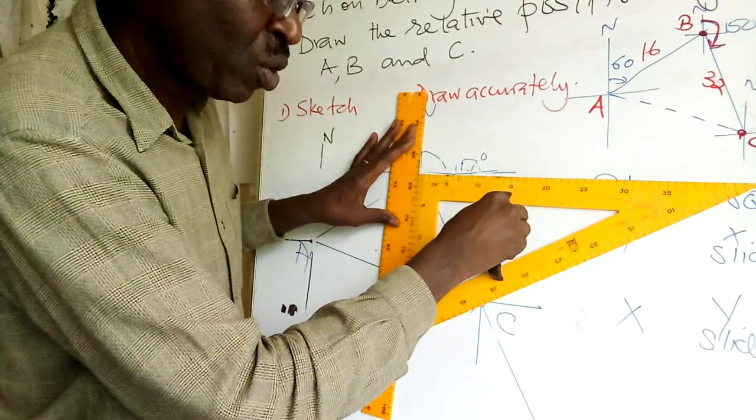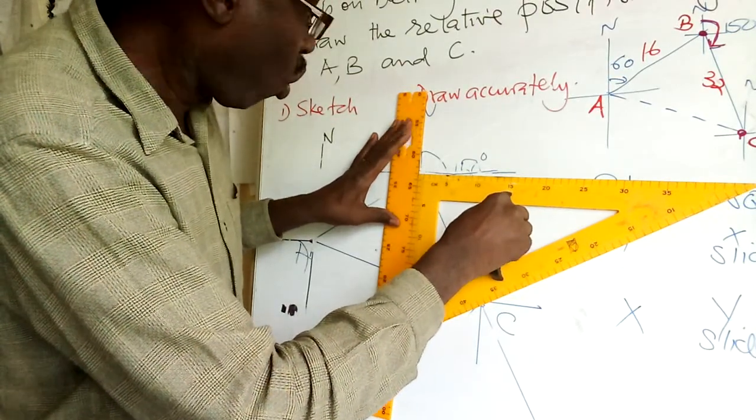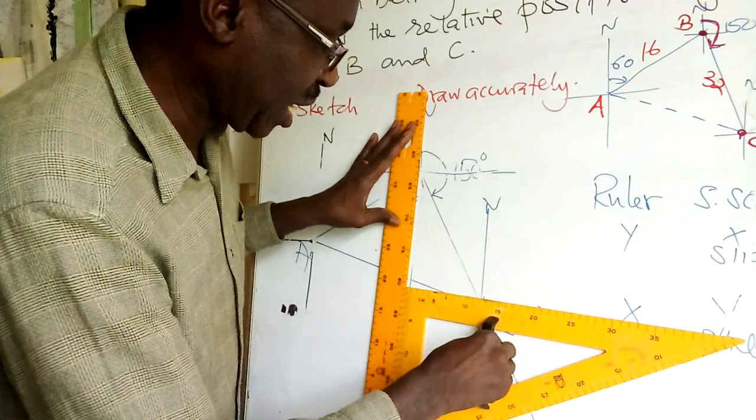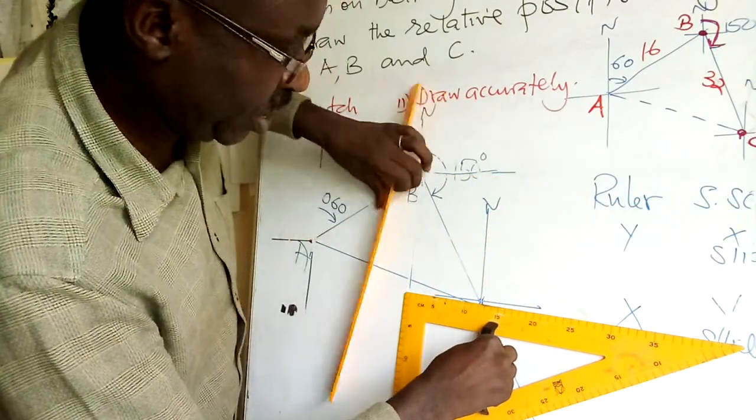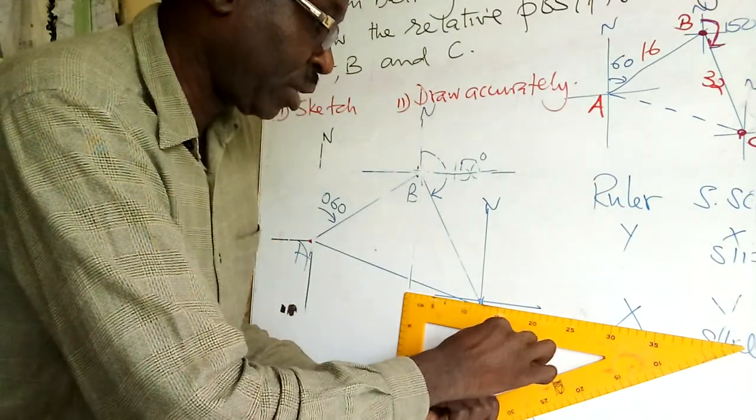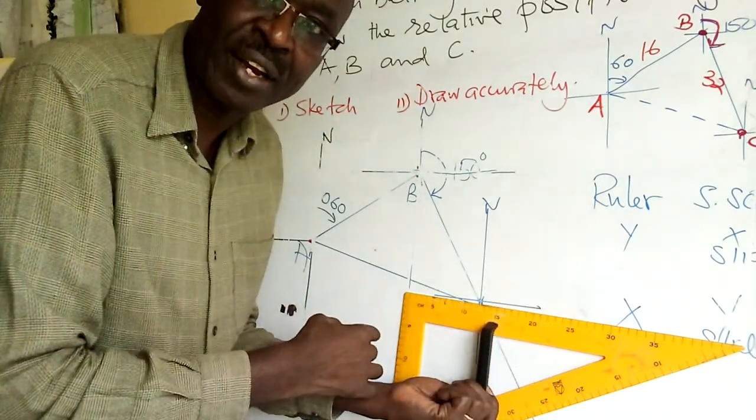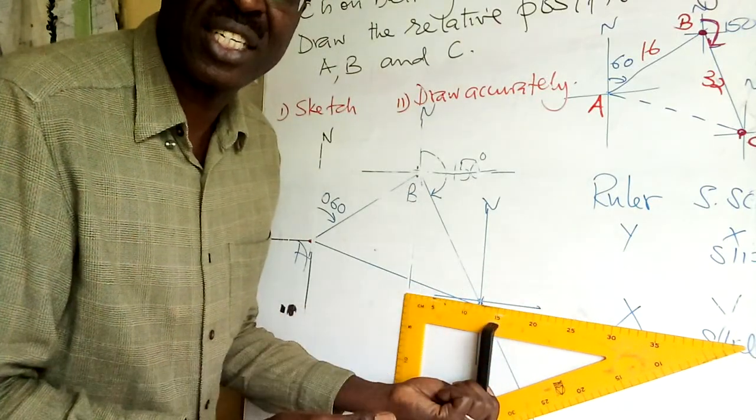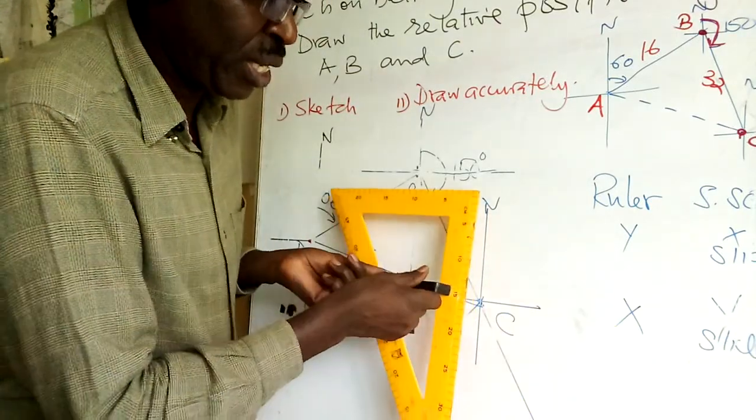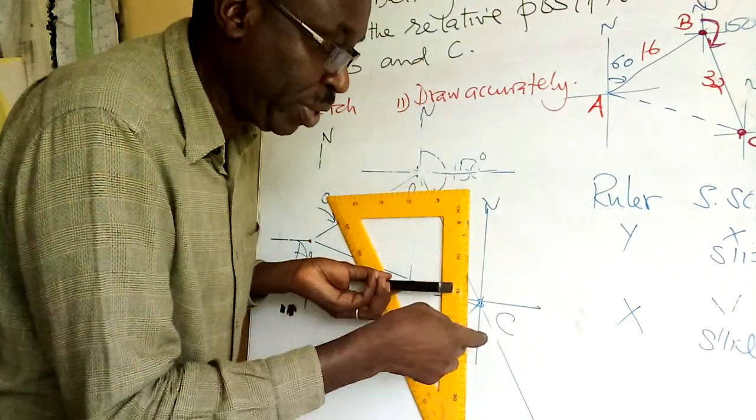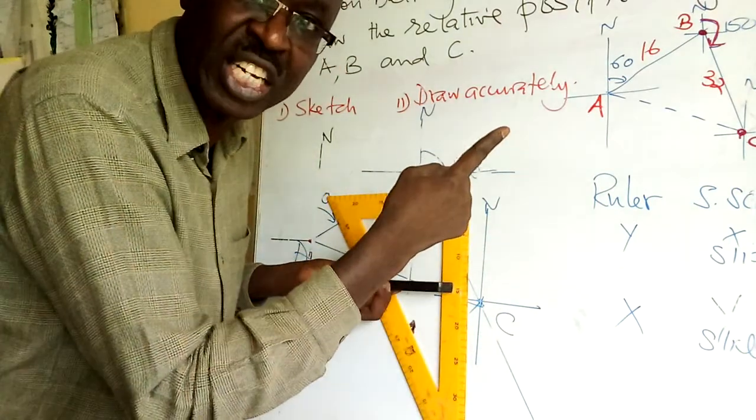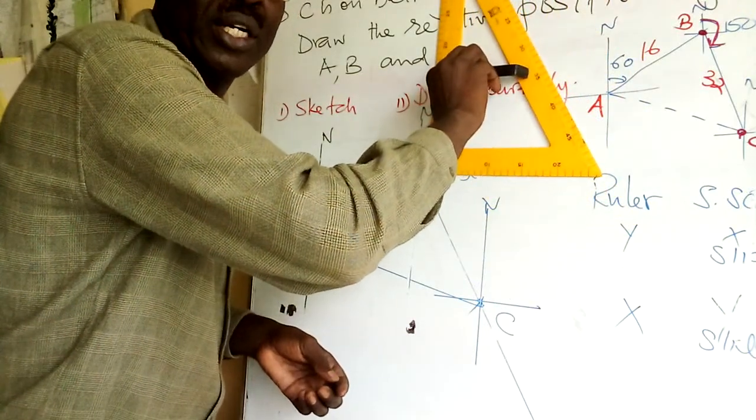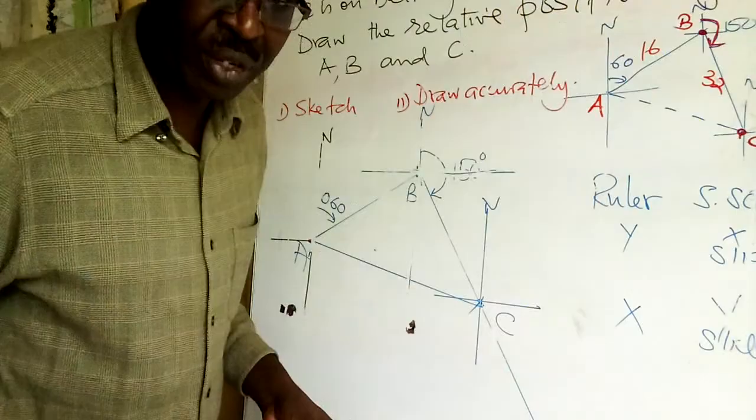After that, hold the ruler firmly. Slide. After sliding there, this one has no work. Then you draw your horizontal line. Then you swap. The ruler now is on x-axis. The set square can be downward, depending on the position from the sketch. Or it can be upward. And then you slide.